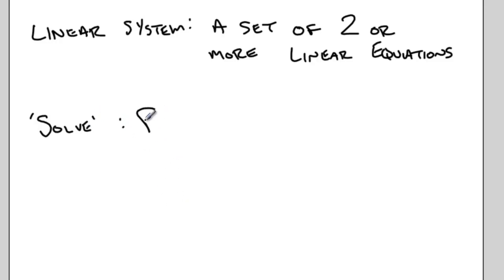And when we ask you to solve a linear system, what we mean is find the point of intersection, or the POI.